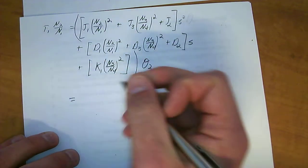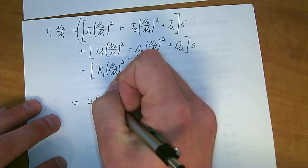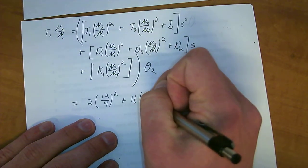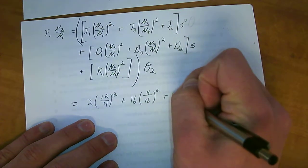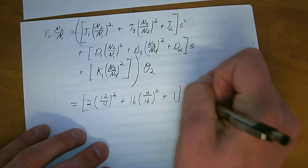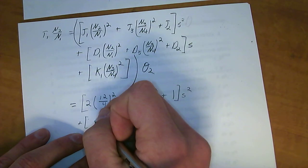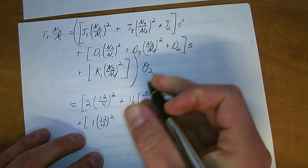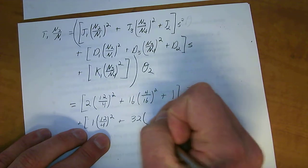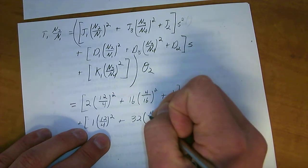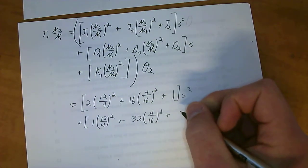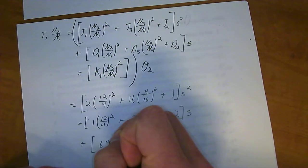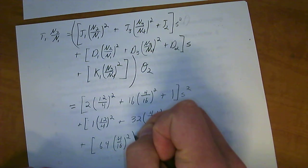So, J1 was 2. N2 was 12. N1 was 4 squared. J3 had a value of 16. N3 was 4. N4 was 16 squared. J2 had a value of 1. S squared. And then we've got plus D1. D1 had a value of 1. N2 again was 12 all over 4 squared. Plus D3 was 32 times N3, 4, all over N4, 16 squared. Plus D2 times 2 times S. Plus K1 which was equal to 64. N3, 4 over 16 squared. Theta 2.